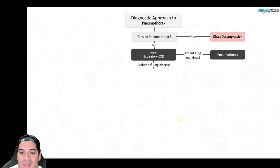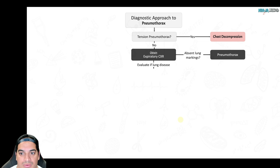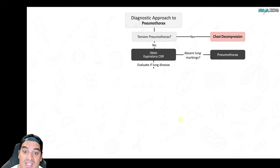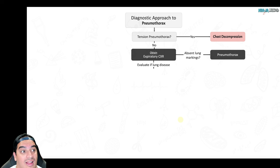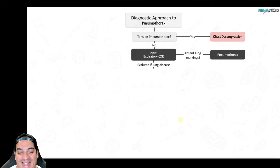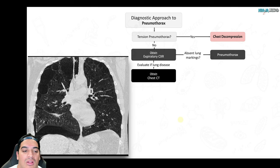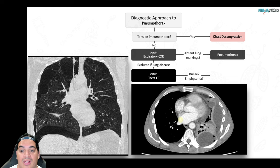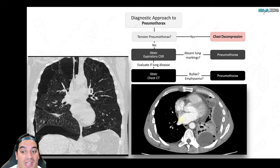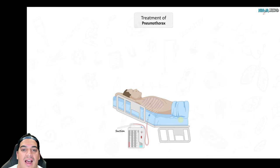The history usually identifies the cause: recent trauma, central line placement, thoracentesis, mechanical ventilation, or history of COPD. Once pneumothorax is confirmed, assess size. If less than 2 cm from the chest wall to the pleural line, you can observe with supplemental oxygen (helps pull nitrogen from the space) and serial chest X-rays.